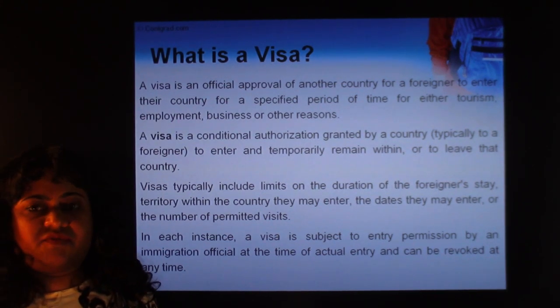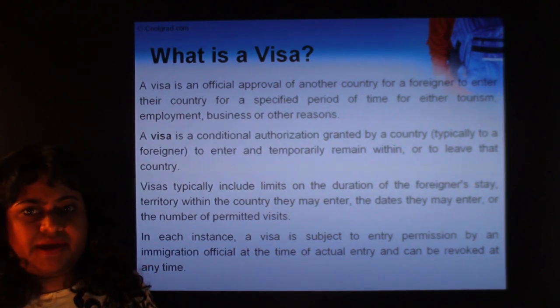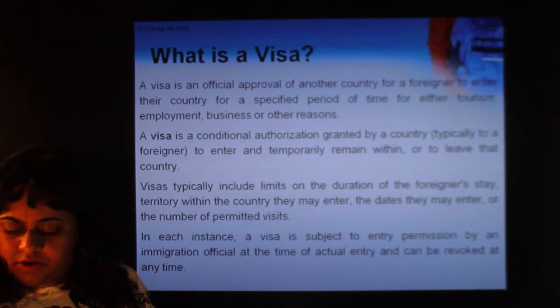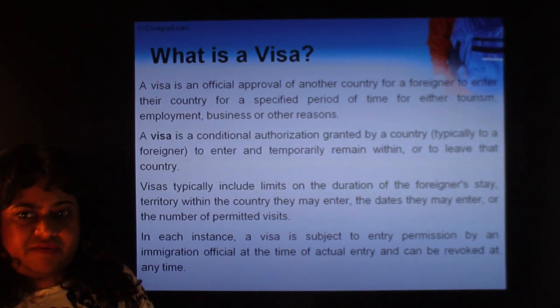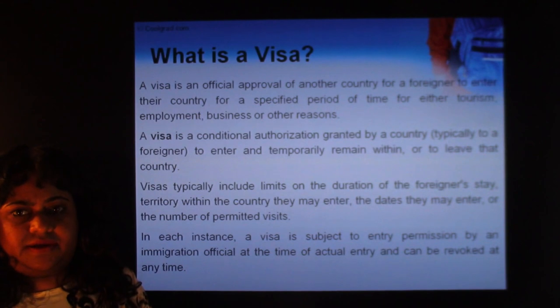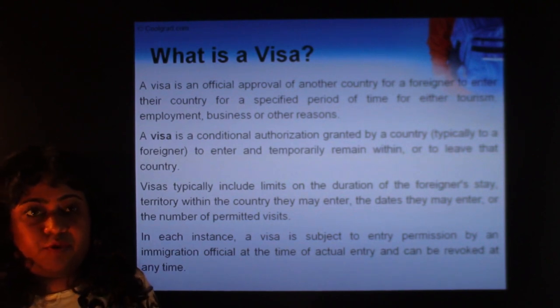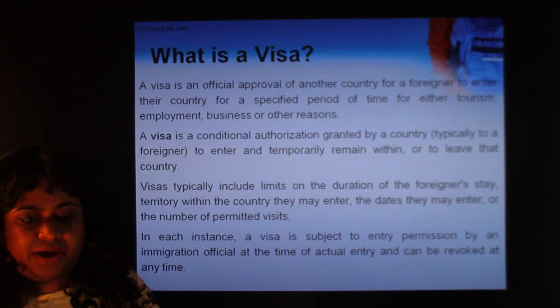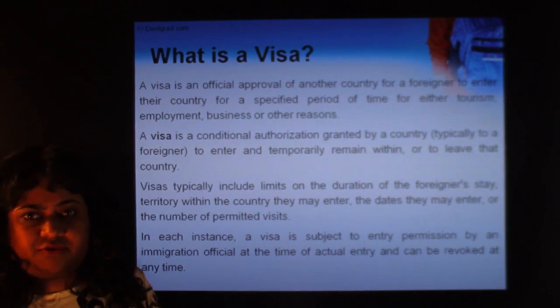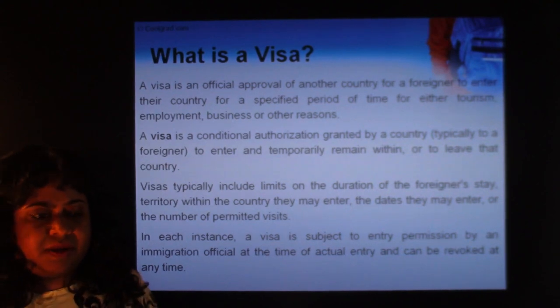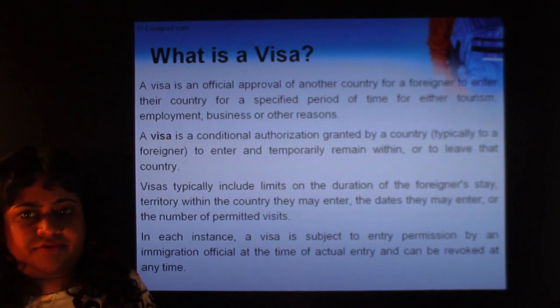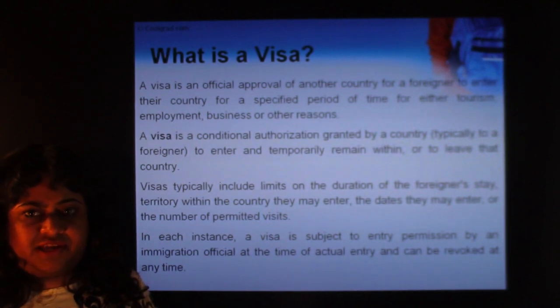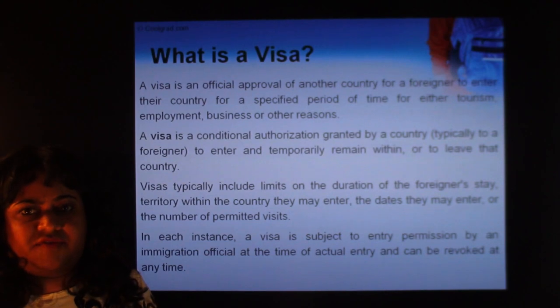There are different types of visas: some are for tourism, some for business, some for employment, and there's even a fiancé visa. Just because you have a visa stamped doesn't necessarily mean you can enter the country freely. For example, a multiple-entry tourist visa for 10 years to the US still requires you to go through immigration at the port of entry, where they determine how long you can stay — up to 180 days per visit.